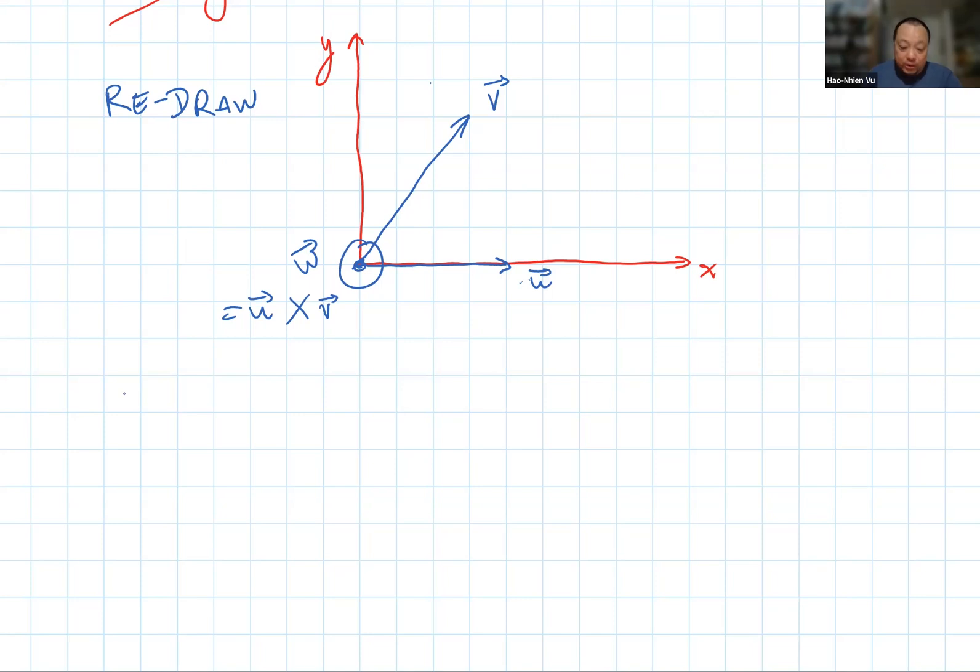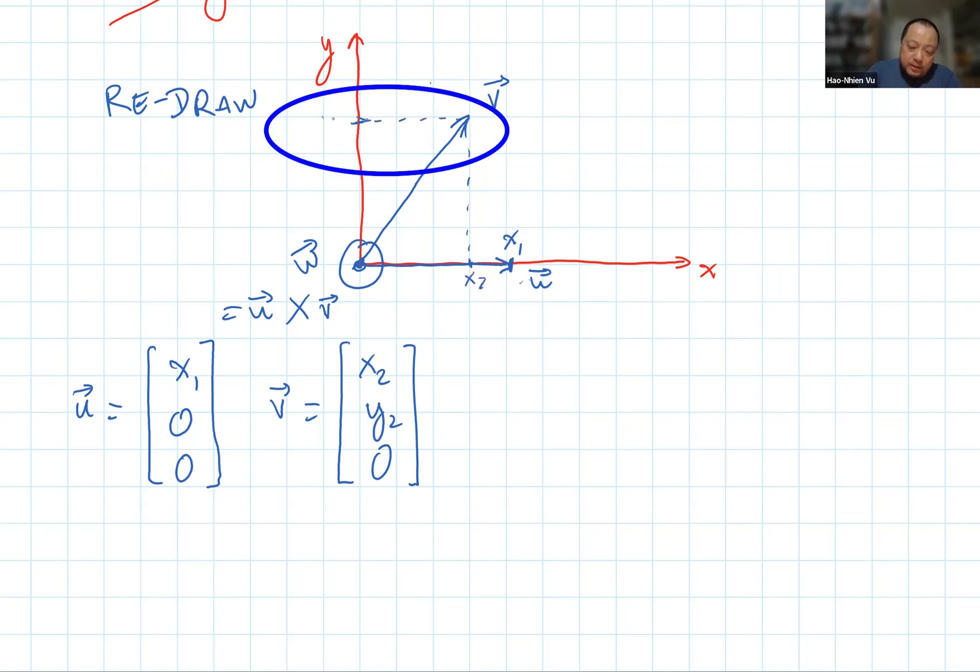Given those axis x and y, then u is equal to x1, 0, 0. X1 is this position here. And because it's on the x-axis, then the y coordinate and the z coordinates are 0. The vector v is on the x, y plane, so it has some sort of x coordinate, some kind of y coordinate, and 0 on the z coordinate. So here's x2 and here's y2.